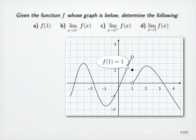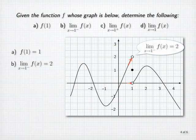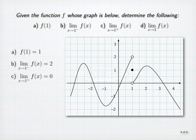As x approaches 1 from the left, the corresponding y-coordinates, or function values, are approaching 2. So the left-sided limit is 2. As x approaches 1 from the right, the corresponding function values are approaching 0. So the right-sided limit as x approaches 1 equals 0. Now, since the two one-sided limits do not agree, the limit as x approaches 1 of f of x does not exist.